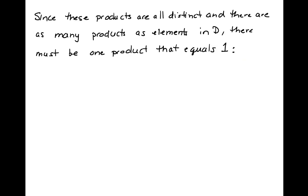Since these products are all distinct, there are as many different products as elements in D. One of the elements in D is the multiplicative identity one. So we know that d times di must equal one for some i somewhere along the way.